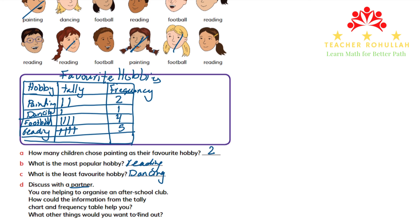It also asks: what other things would you want to find out? Besides football, painting, and reading, there may be other hobbies to explore — for example, cooking or playing games. There are many options we could include in our survey.